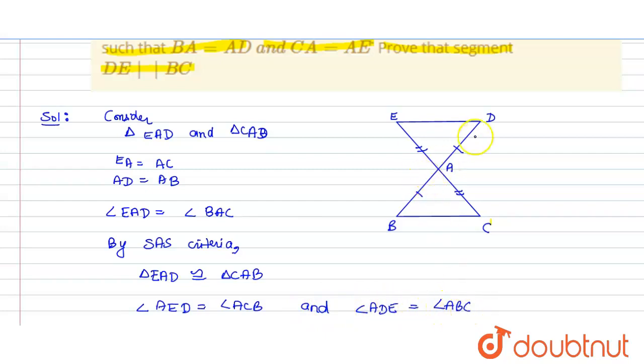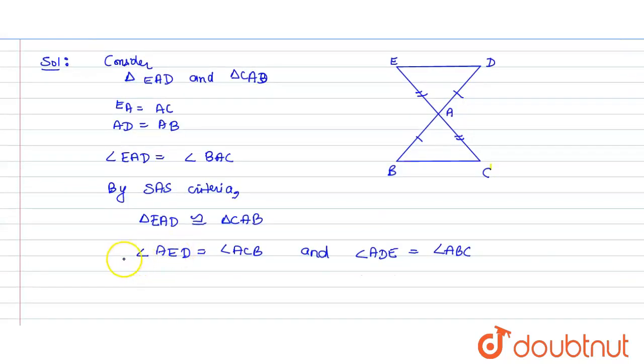Or we can say that angle CED is equal to angle ECB, and angle BDE is equal to angle ABC.